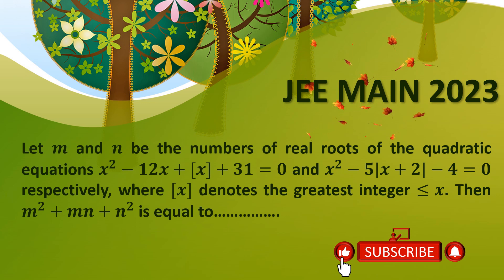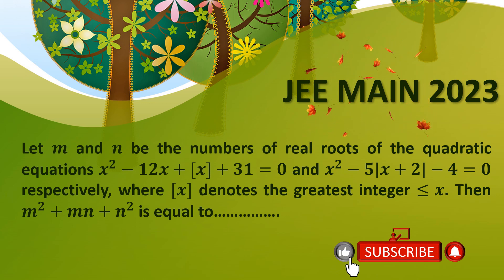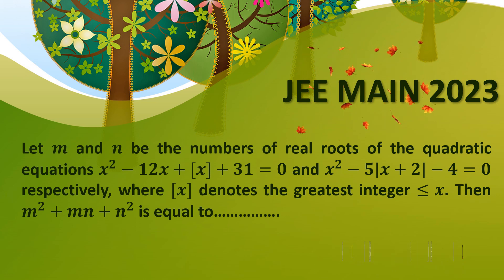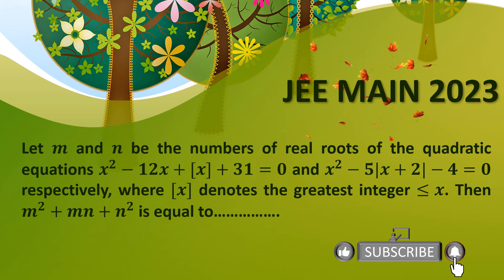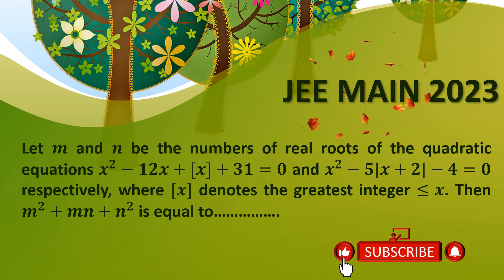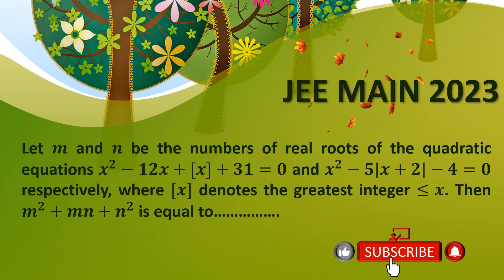In this video, we are going to solve a problem which appears in JEE Main 2023. It's a very interesting problem. We have two equations: one involving the greatest integer function and one involving the mod function. Here m and n are the number of real roots for each given equation, and we have to find m²n + mn². So we need to find out the number of real roots of these two equations.